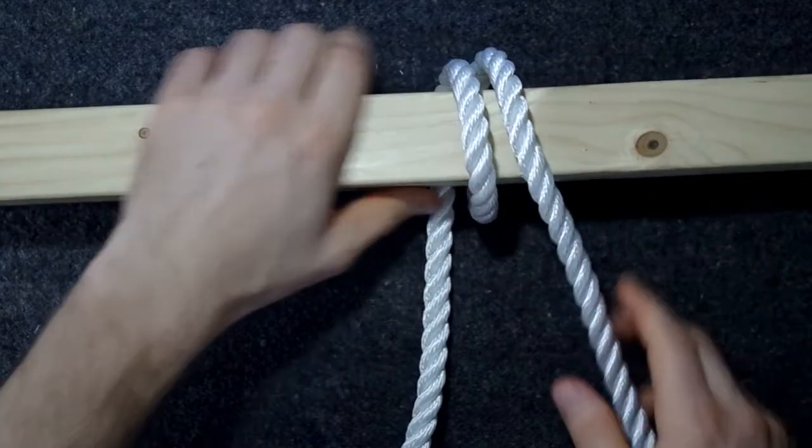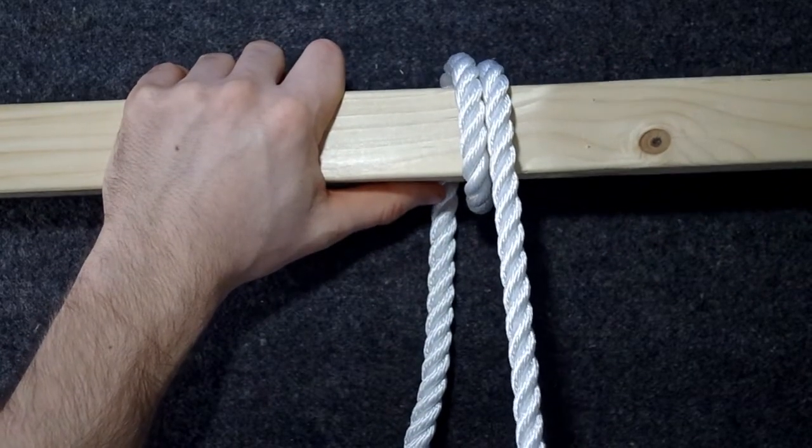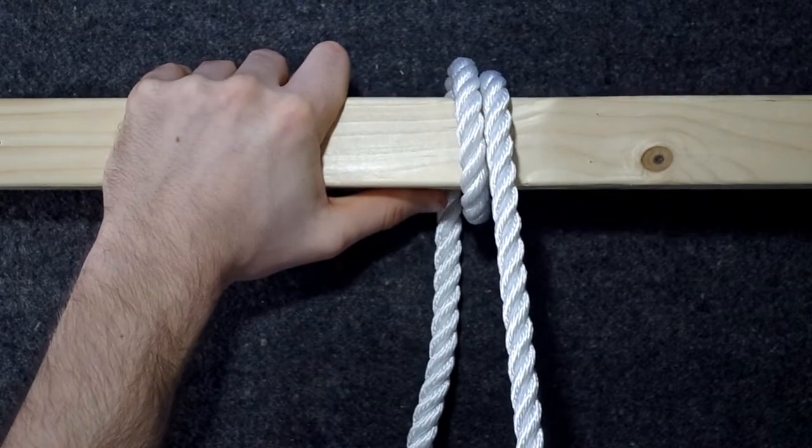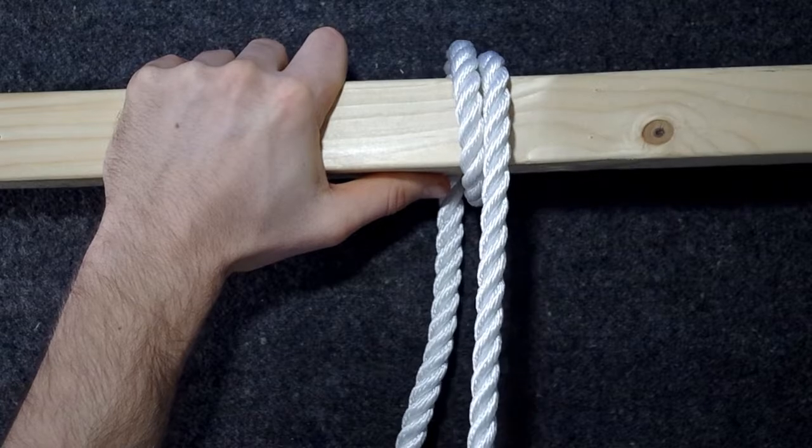And we make use of this as well in the round turn and two half hitches. So this knot, the round turn and two half hitches, you use the tension here. You can have a really strong load here but you can see I'm not even holding this.